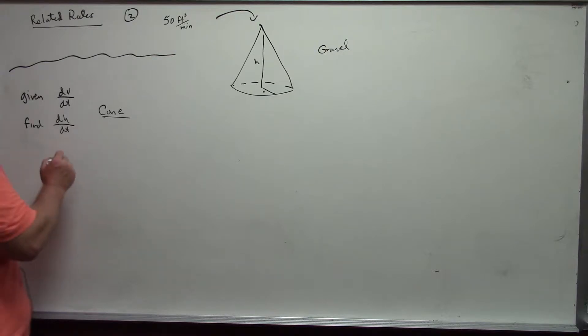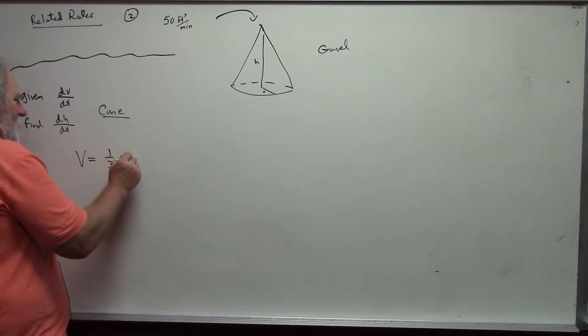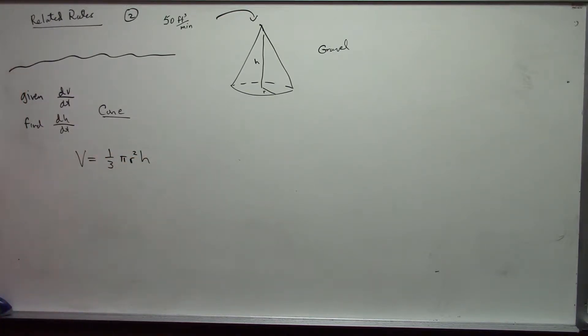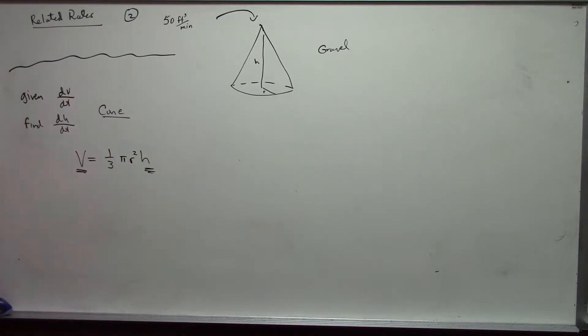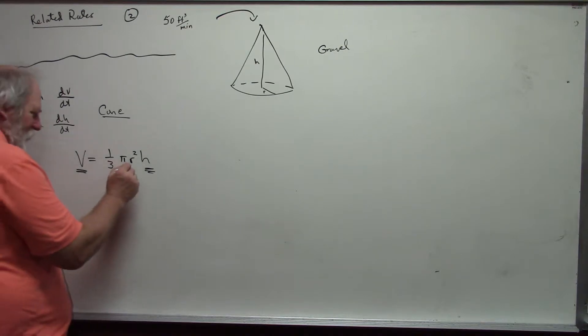And so, the formula for the volume of a cone is volume is one-third pi r squared h. And notice in this case, I have the important variable of v, the rate that I'm given, the important variable of h, the rate that I want to find, and I also have another variable.